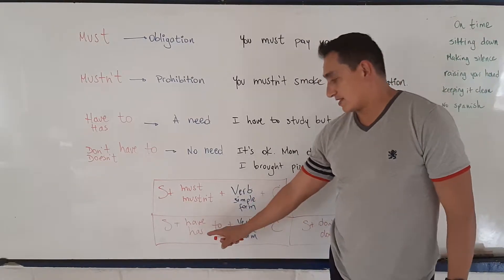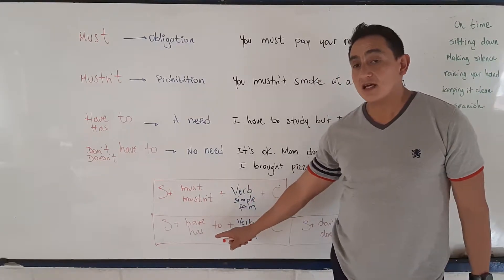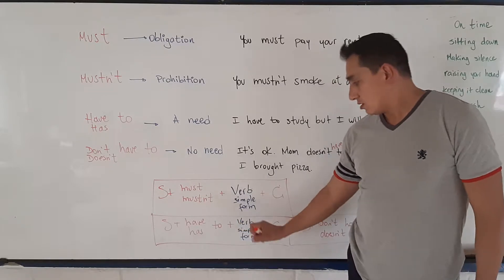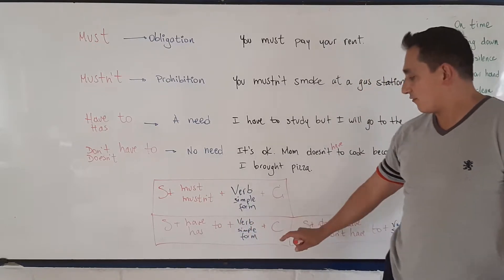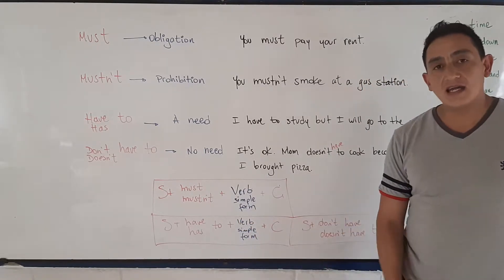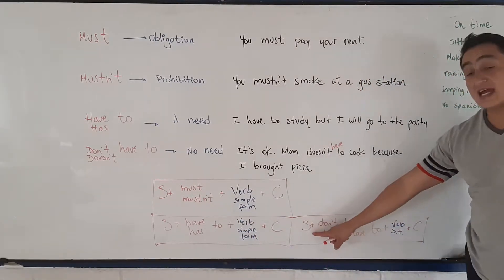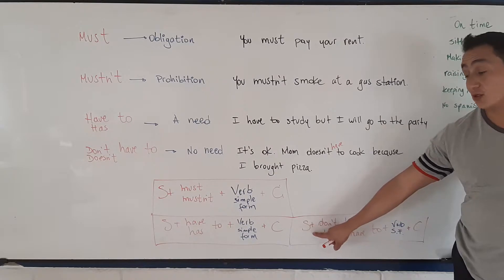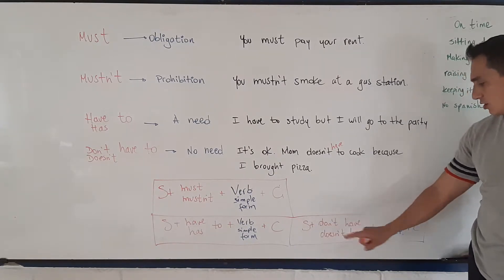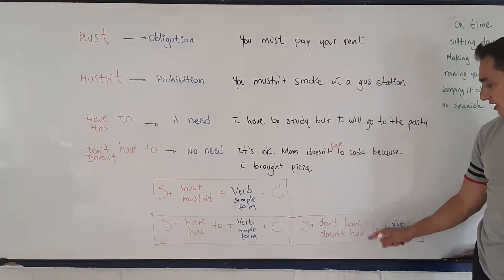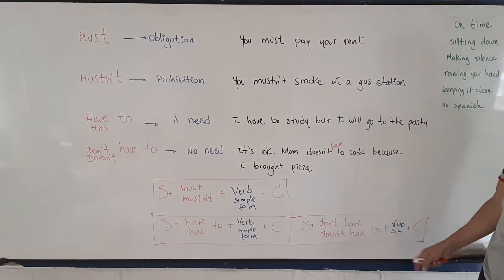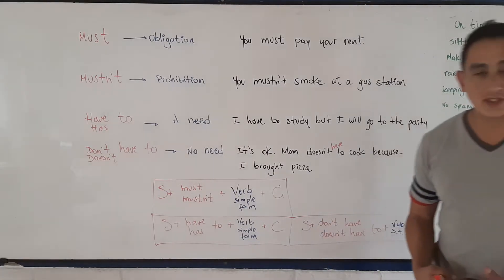Or subject plus have to, the verb in simple form, and a complement. And if you want to make negatives with have to: subject plus don't have to or doesn't have to, plus a verb and a complement.